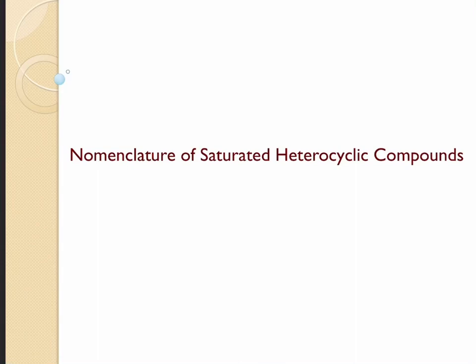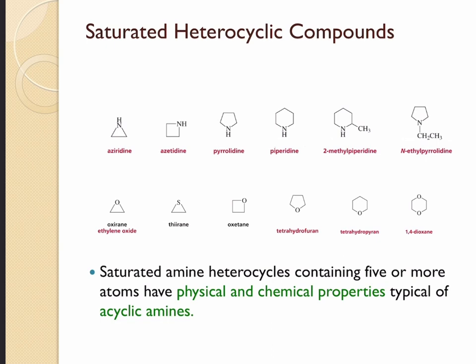In the nomenclature of saturated heterocyclic compounds, when nitrogen is one of the atoms in the cyclic structure, it should have a prefix of 'aza.' In this compound, we have three atoms in the ring structure and one of those atoms is nitrogen, therefore this should be called aza cyclopropane.